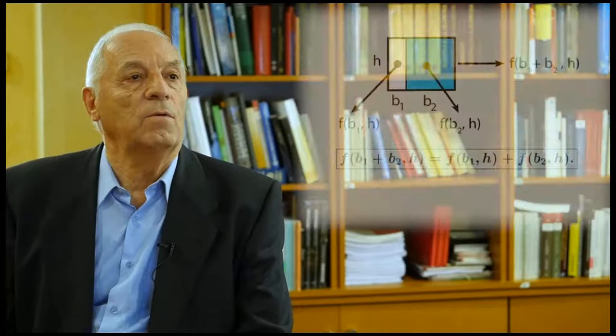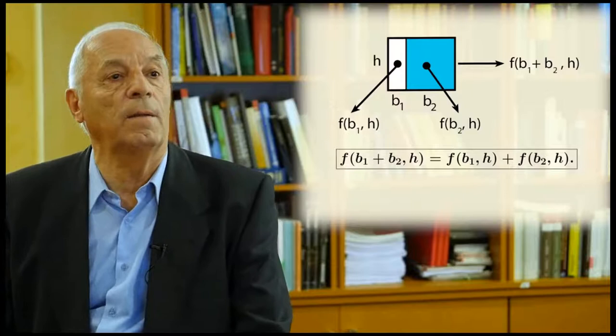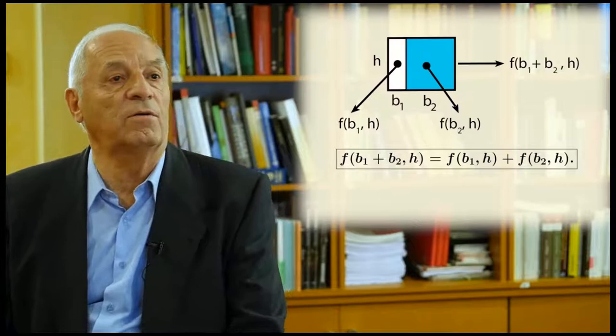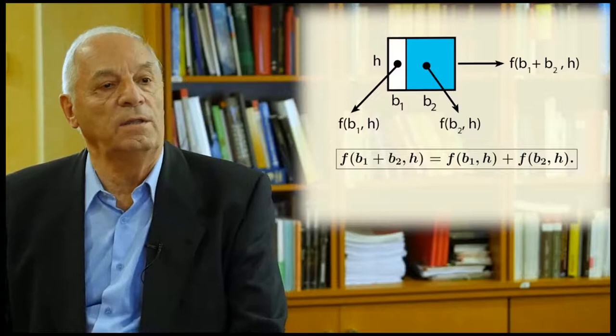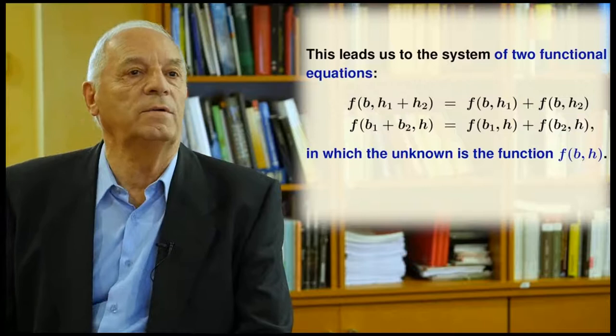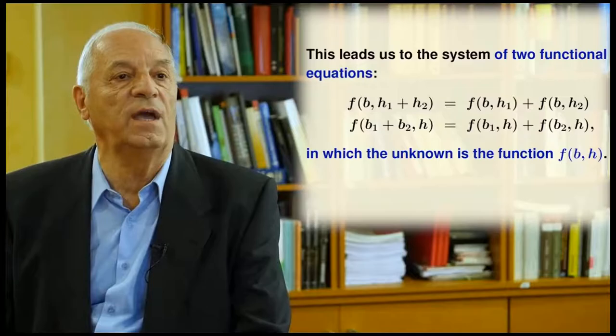Next, I divide the rectangle vertically into two rectangles, the blue one and the white one. I express the same condition: the area of the initial rectangle must equal the sum of the areas of the other two rectangles, and I obtain another equation. As a summary, I have two equations and only one unknown, so this is a system of two functional equations in one unknown. The unknown is the function f.